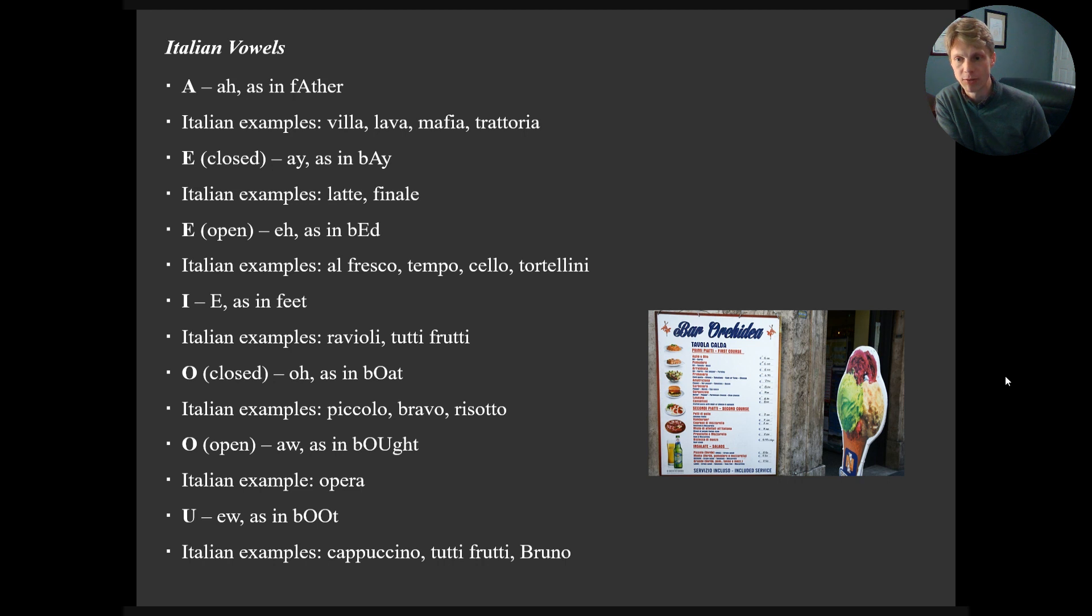We have I, pronounced E, as in feet. Some examples we have in Italian that you probably know are ravioli, tutti frutti, which is why I put this picture of gelato here on the right to entice us. Then we have a closed O, as in boat. So the instrument piccolo, bravo, risotto. Then we have an open O, which is A, as in bot. Think of opera, opera. U, as in boot. You've seen this a lot with cappuccino, cappuccino. And tutti frutti. And Bruno, as in the name Bruno.